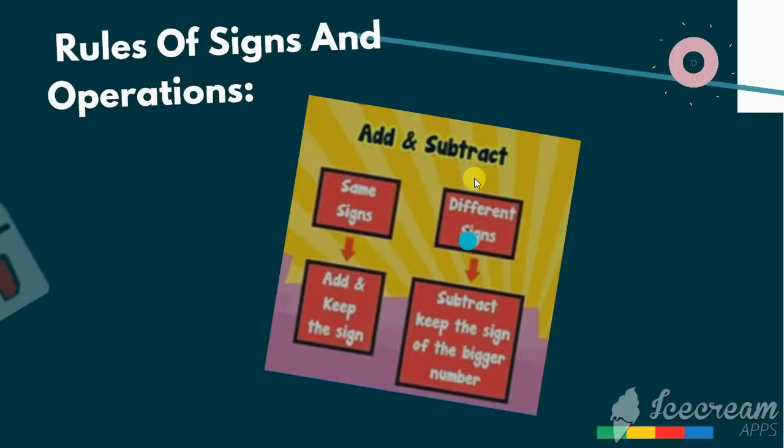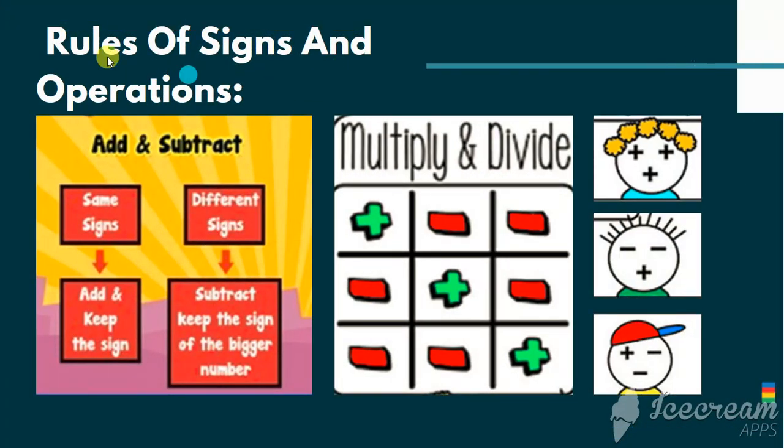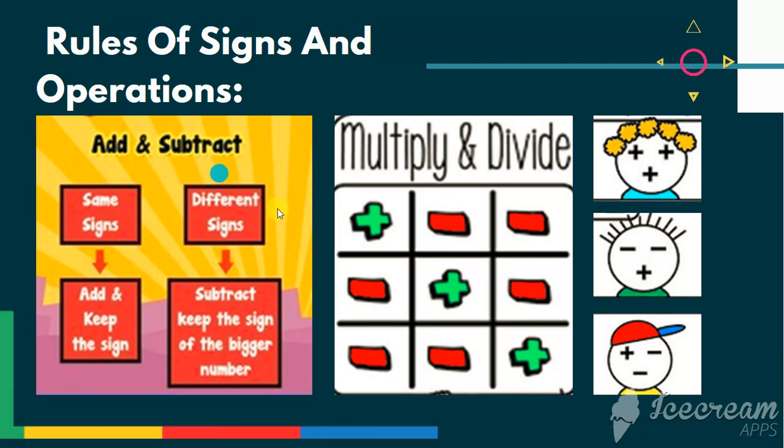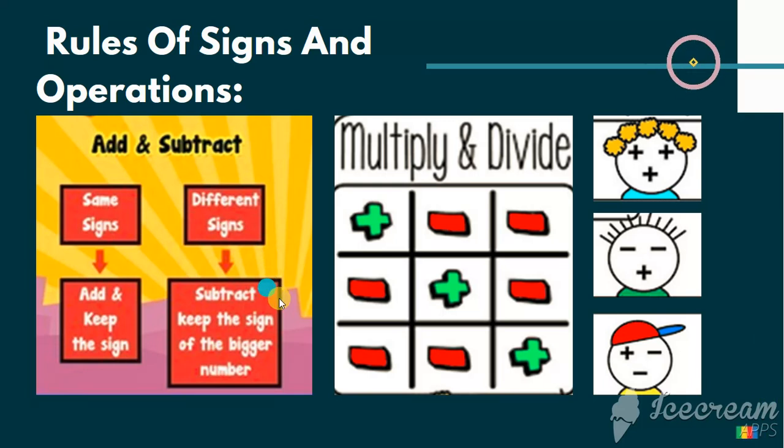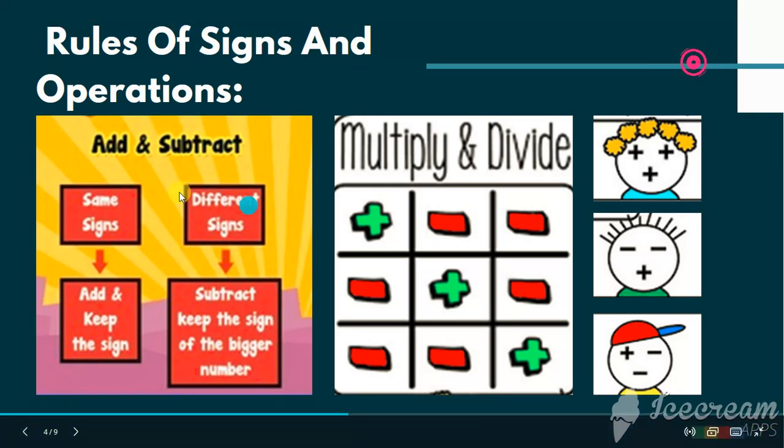This is the key point of algebra: rules of signs and operations. In addition and subtraction, if they are the same signs, so add and keep the sign. If they are different signs, so subtract and keep the sign of the bigger number. Let's repeat. Same sign, add and keep the sign.